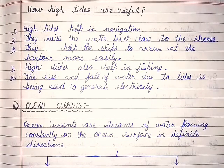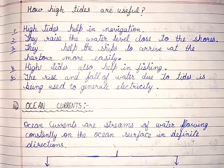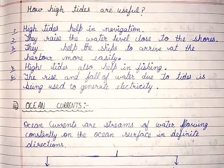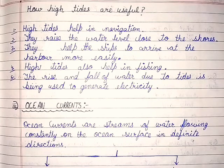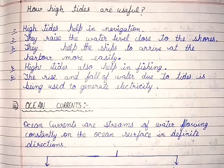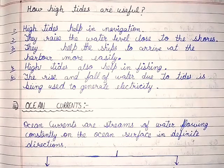How are high tides useful? High tides help in navigation — they raise the water level close to the shores and help ships to arrive at the harbor more easily. High tides also help in fishing. The rise and fall of water due to tides is also being used to generate electricity.